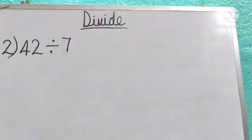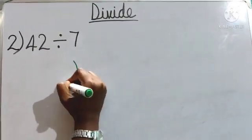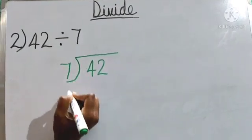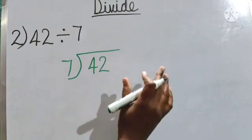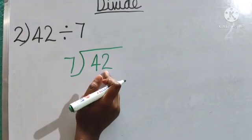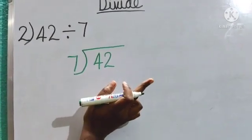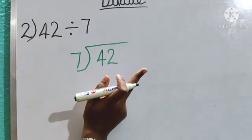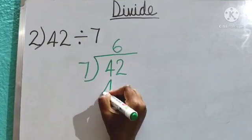Now let us see question number 2. Children, you can see number 2 is 42 divided by 7. First we do the long division — the bigger number, 42, is the dividend, and 7 is the divisor. We are going to read the table of 7: 7 times 1 is 7, times 2 is 14, times 3 is 21, times 4 is 28, times 5 is 35, times 6 is 42. So 6 times — we write 6 here, and 6 times 7 gives us 42.